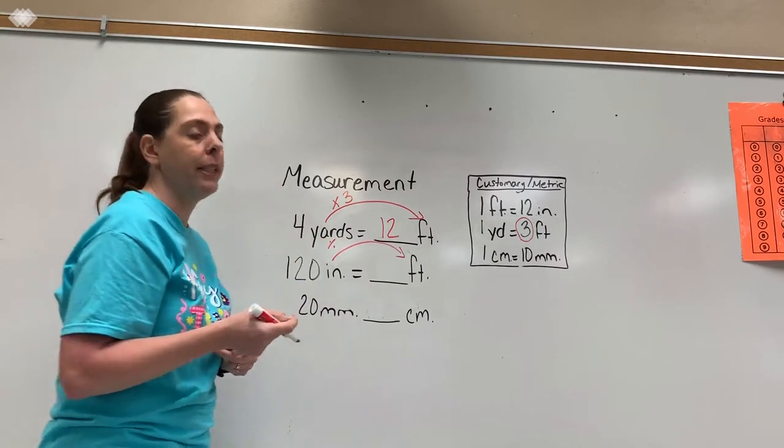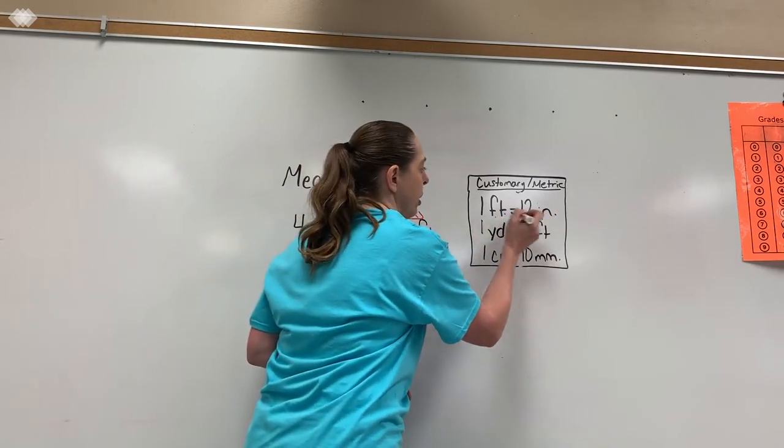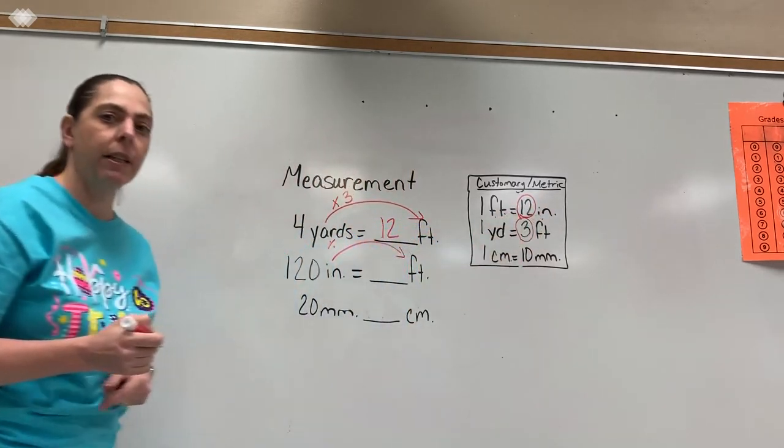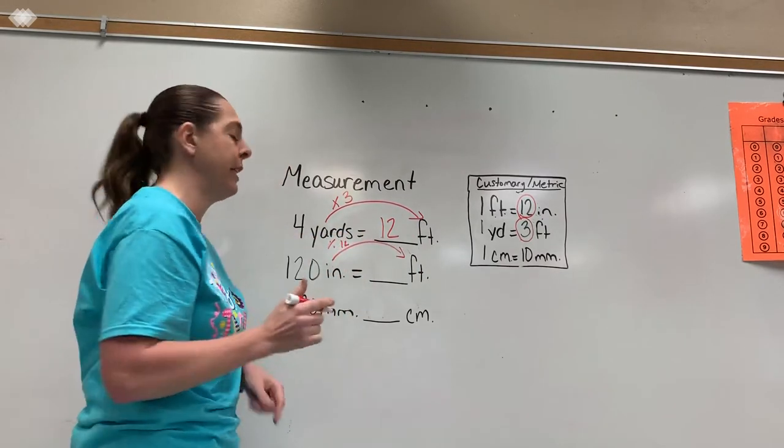Now I've got to figure out what am I going to divide by? So I'll go find inches and feet. Here's my inches and feet. And my number is 12. So that's what I will divide by. So now we need to do a division problem.